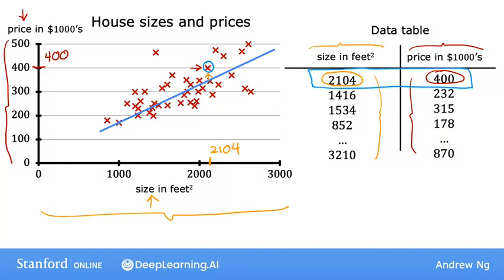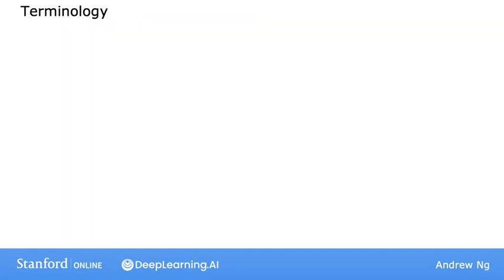Now let's look at some notation for describing the data. This is notation you'll find useful throughout your journey in machine learning. You'll be seeing this notation multiple times in the specialization, so it's okay if you don't remember everything the first time through.